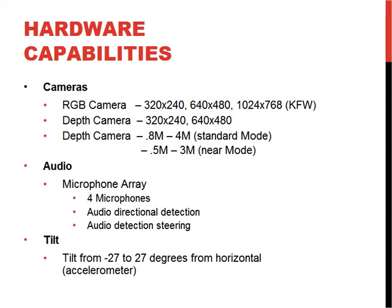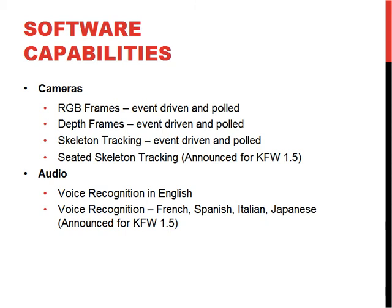The tilt mechanism operates from negative 27 to 27 degrees from horizontal. Not a lot of people are aware that there's an accelerometer inside the Kinect — so even if it's mounted off true horizontal, the accelerometer makes sure that negative 27 to 27 degrees is measured from actual horizontal. We learned this with the Smarter Cart when we tried to trick it with a custom mount to point further down — and it didn't work so well.